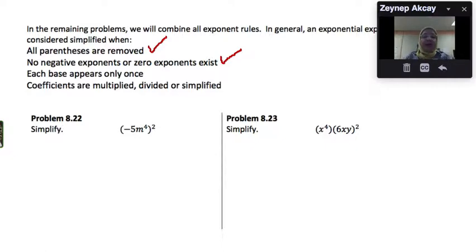Each base appears only once. So we shouldn't have a in two places. We should simplify, and each base should appear once.